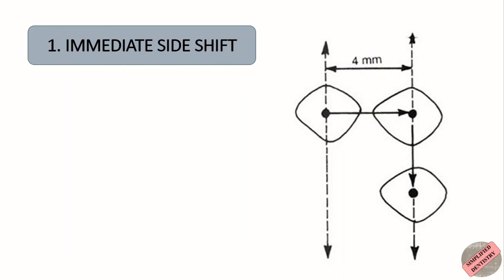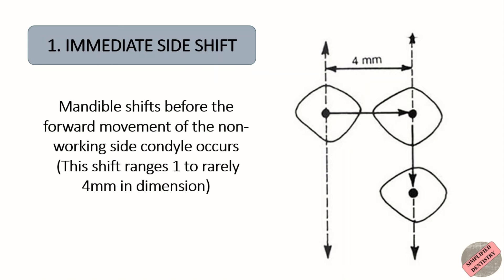First is immediate side shift. Here the mandible shifts before the forward movement of the non-working condyle occurs. This movement occurs in 86% of the condyles studied.